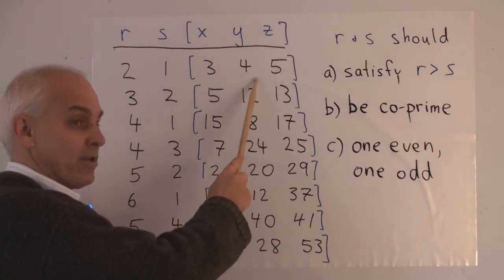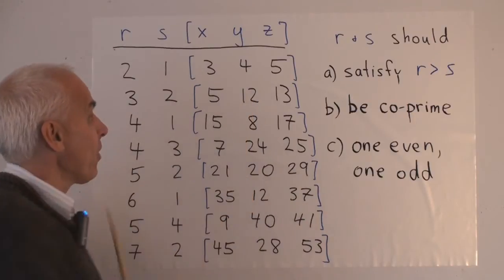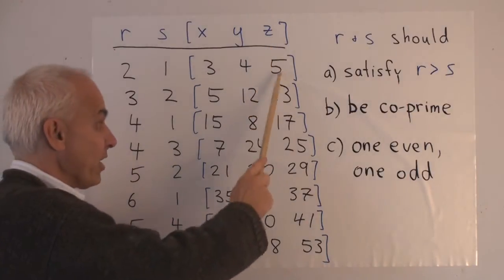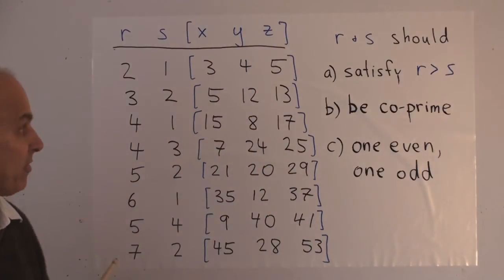y, which is 2 times r times s, will be 4. And z, which is r²+s², that will be 5.